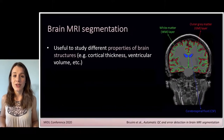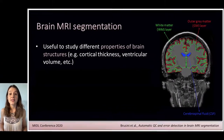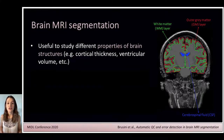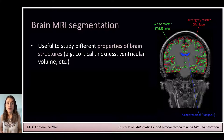Brain MRI segmentation is an essential task in many clinical and research applications, since it allows us to visualize brain anatomical structures and study their properties. It can be used, for example, to derive measures of cortical thickness or ventricular volume, which constitute important information for diagnosing neurodegenerative disorders, including Alzheimer's disease.